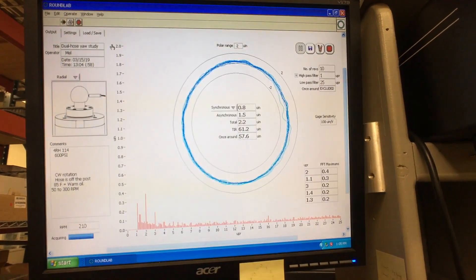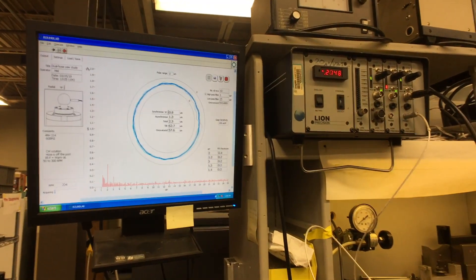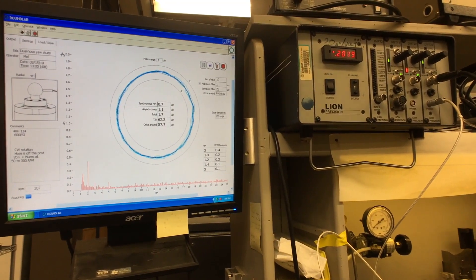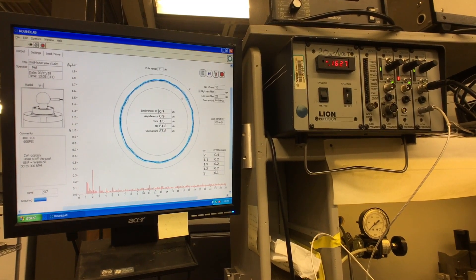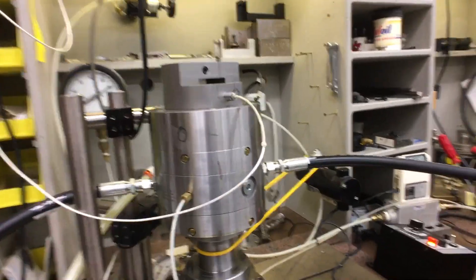Now we're looking at our air motion plot of the 4-RH hydrostatic spindle. It's pretty good - down well under one micro-inch, which is about the best you're going to get out of an oil hydrostatic spindle.